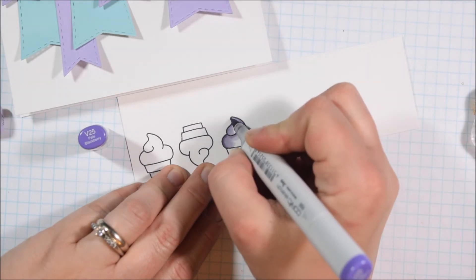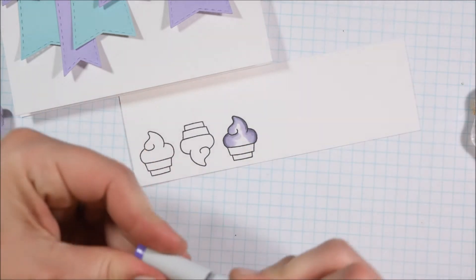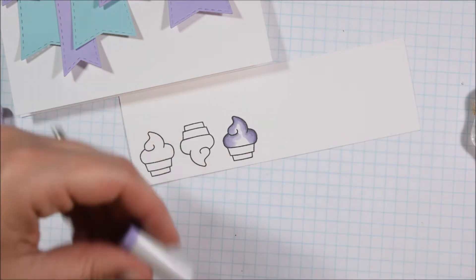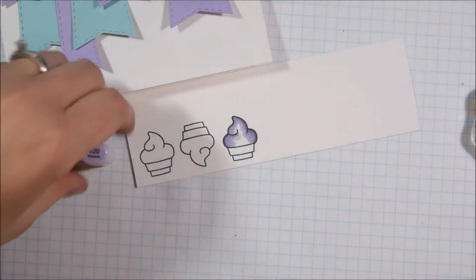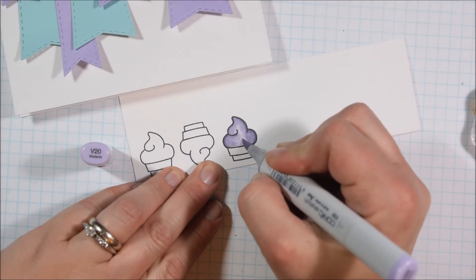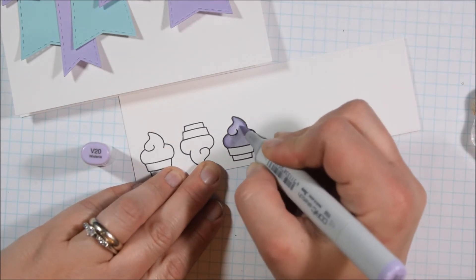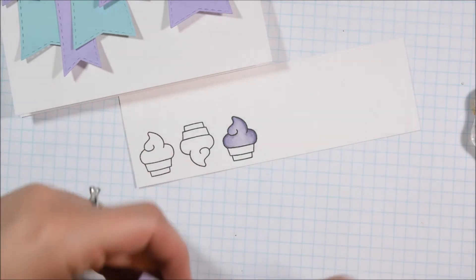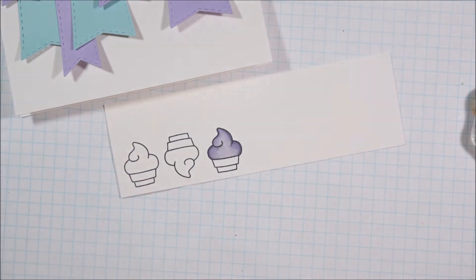I tried to find some Copics in my collection that paired well with the cardstock that I used. So I'm using V25, V22, and V20 for the top of the probably frozen yogurt, since it's purple rather than ice cream, although of course ice cream and frozen yogurt both come in all kinds of colors.